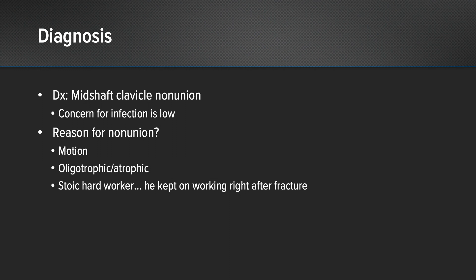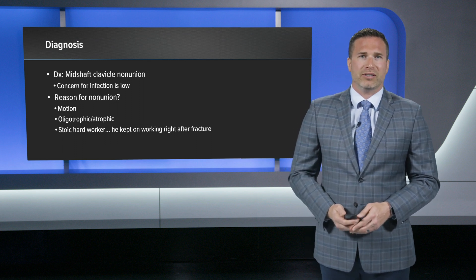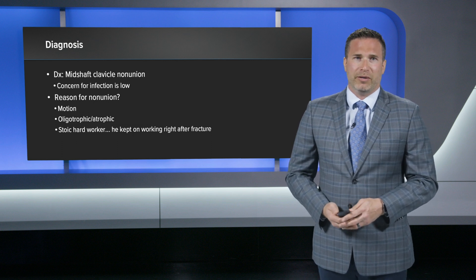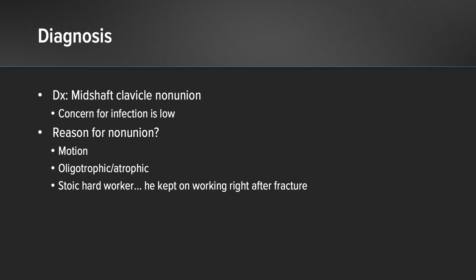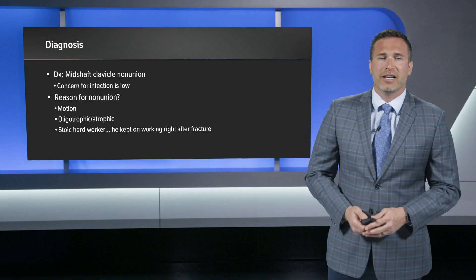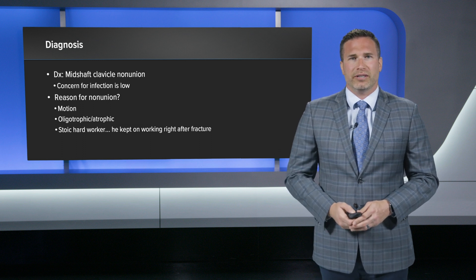As a physician, you always have to look and see why the fracture did not heal. For this patient, I believe it was motion. He immediately went right back to work in the field, working hard — he had motion, nothing to strut the fracture, and he didn't have any downtime. On the x-rays it did appear a little oligotrophic or atrophic, which typically means he's not getting the best biologic response — something I want to augment. All of that contributed to the reason for the non-union.